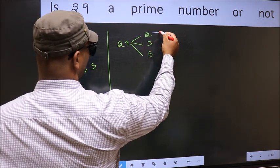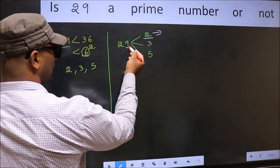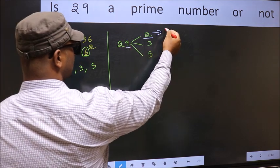First with 2. Here, last digit is 9, not even. So, this is not divisible by 2.